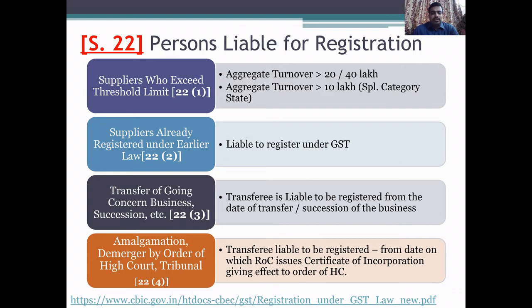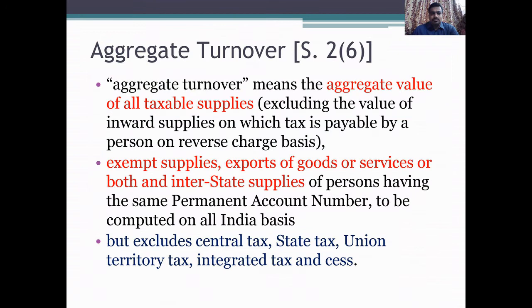Section 22, subsection 4 deals with amalgamation or demerger by the order of a High Court or Tribunal. In such a case, the transferee is liable to be registered from the date on which the Registrar of Companies issues a certificate of incorporation with effect to the order of the High Court.